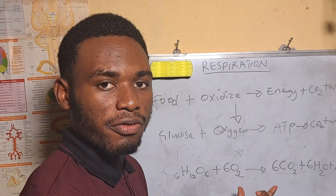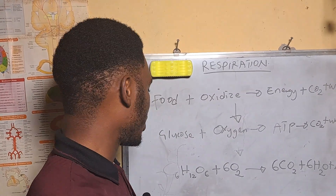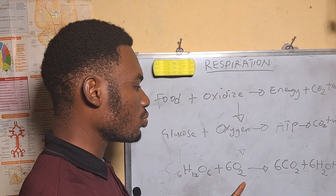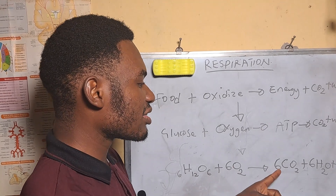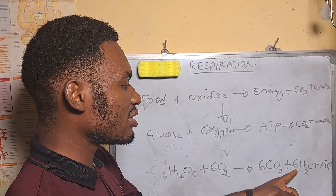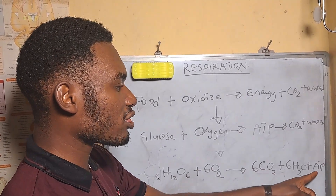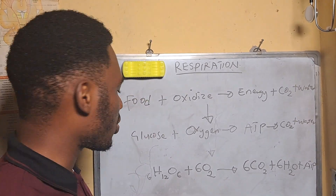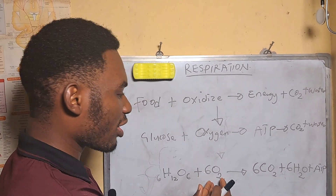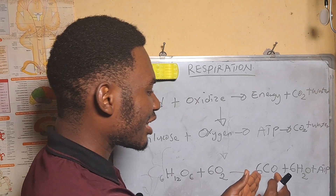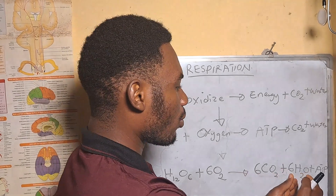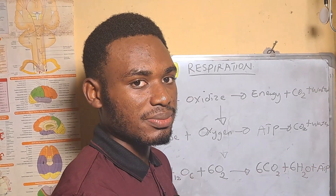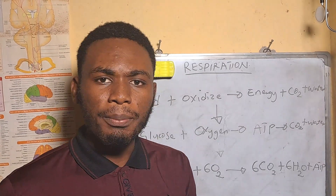The real equation of respiration is: C6H12O6 plus 6O2 gives us 6CO2 plus 6H2O plus ATP. This stands for glucose plus oxygen giving carbon dioxide, water, and ATP — which is the energy. Respiration can be of two types: we have external respiration and we have internal or cellular respiration.